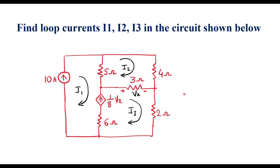In this video, I will consider one numerical on loop analysis. Find loop currents I1, I2, I3 in the circuit shown below. So here, this is the given circuit. I1, I2, I3 directions are shown. We need to calculate these three loop currents using the loop analysis method.